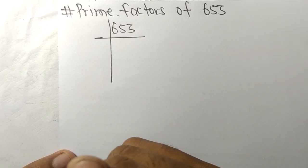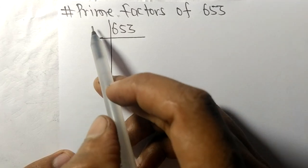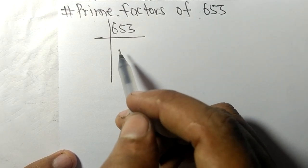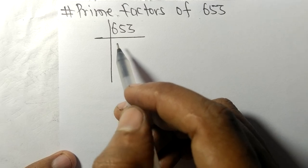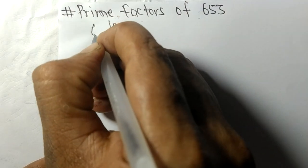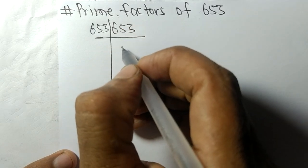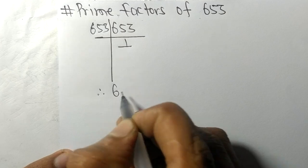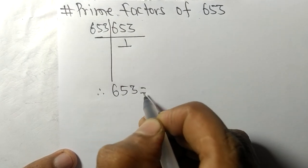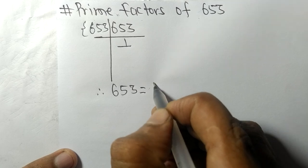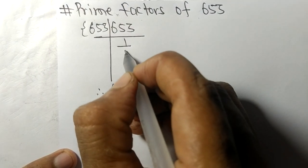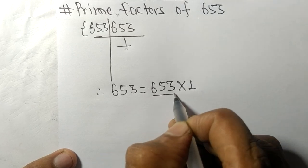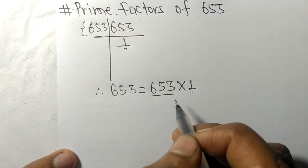Today we shall learn to find the prime factors of 653. 653 is a prime number, so it is divisible by 653 only, and on dividing we get 1. Therefore, 653 equals 653 × 1, so 653 and 1 are the prime factors of 653.